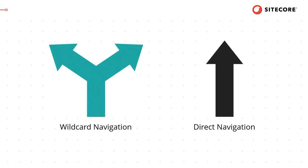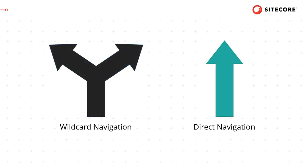With the latest release, we're now introducing a new navigation method called Direct Navigation. When using this approach, instead of using a wildcard page to represent different catalog data, you actually use the catalog items themselves. This means that each category or product represents a different page within the site. In this video I want to show you the differences between each of these approaches and when you would likely use one over the other.